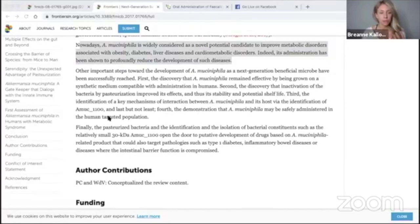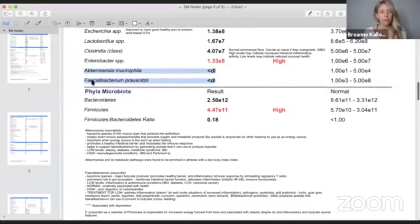The other one that we saw low on this patient's GI map was Faecalibacterium prausnitzii. When you have lower levels of Akkermansia, you don't have as much crumbs lying around, so you don't have as much fuel source for Faecalibacterium prausnitzii. This one's really important because it produces butyrate, a short-chain fatty acid that's really important for the intestinal health cells.